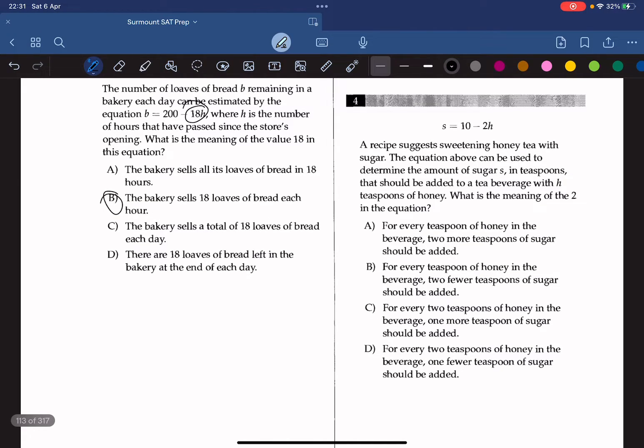A recipe suggests sweetening honey tea with sugar. The equation above can be used to determine the amount of sugar s in teaspoons that should be added to a tea beverage with h teaspoons of honey. What is the meaning of the 2 in the equation? Negative 2 here refers to the slope because there's a variable attached to it. This means that there are two fewer teaspoons of sugar that should be added for every teaspoon of honey that is already in the beverage. The slope is always the change in y for each unit increased in x, so the answer should be B.